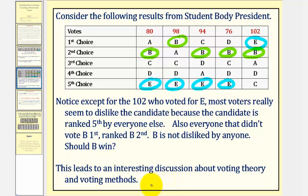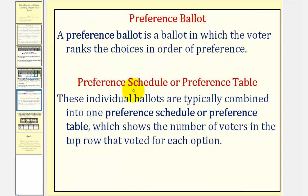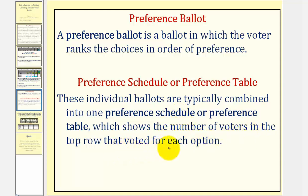In this series of videos, we'll be discussing various voting methods. But for this introductory video, let's begin by defining a preference ballot and a preference schedule or preference table. A preference ballot is a ballot in which the voters rank the choices in order of preference. A preference schedule or table is when these individual ballots are typically combined into one preference schedule or table, which shows the number of voters in the top row that voted for each option.